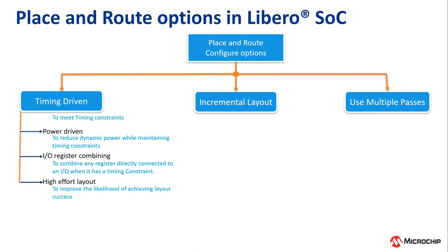The third option is high-effort layout. This option is used to improve the likelihood of achieving layout success. High-effort layout should be considered as the last resort if the design is not able to meet timing with all other settings. If a user enables this option, layout runtime will increase and the design may not meet the timing constraints.